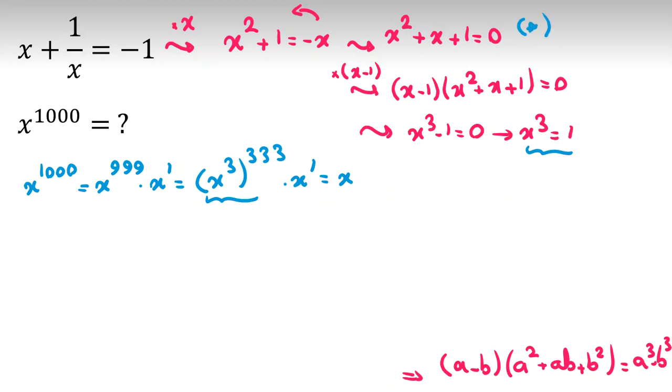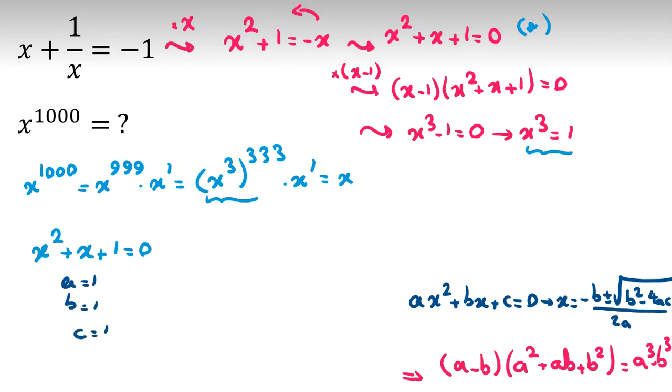Now, if I call this one star, x squared plus x plus 1 equal to 0, I want to find what x is. You should use quadratic equation that if you have ax squared plus bx plus c equal to 0, the formula is x equal to negative b plus minus square root of b squared minus 4ac all over 2a. So here a is 1, b is 1, c is 1.